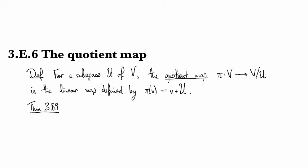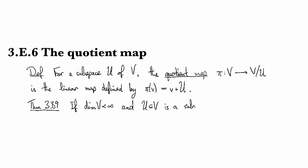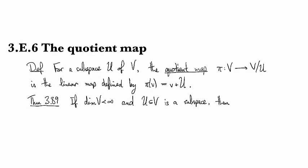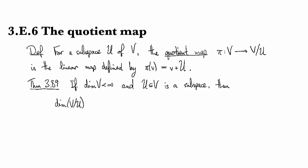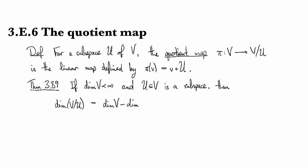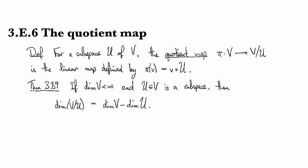So theorem 389 says that if we have a finite dimensional vector space with a subspace u, then the dimension of v mod u, and I ran out of space, is the difference: dimension v minus dimension u.